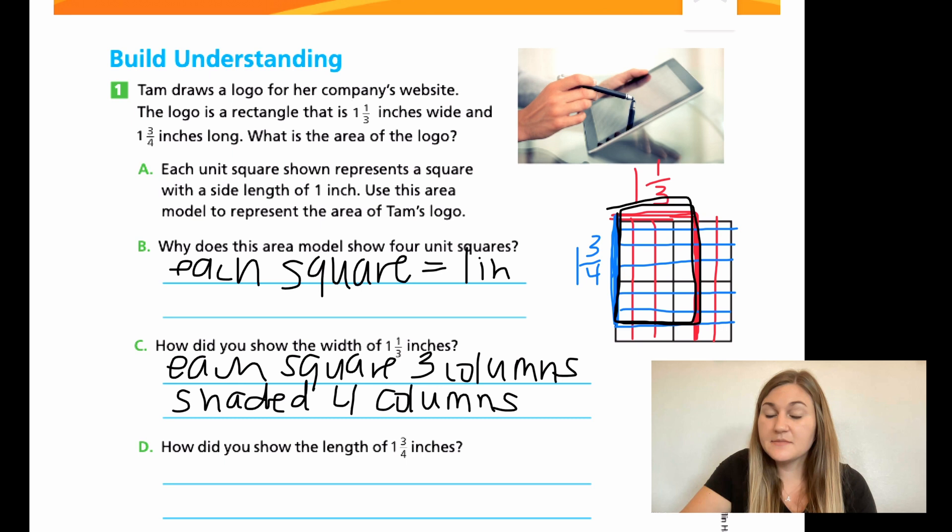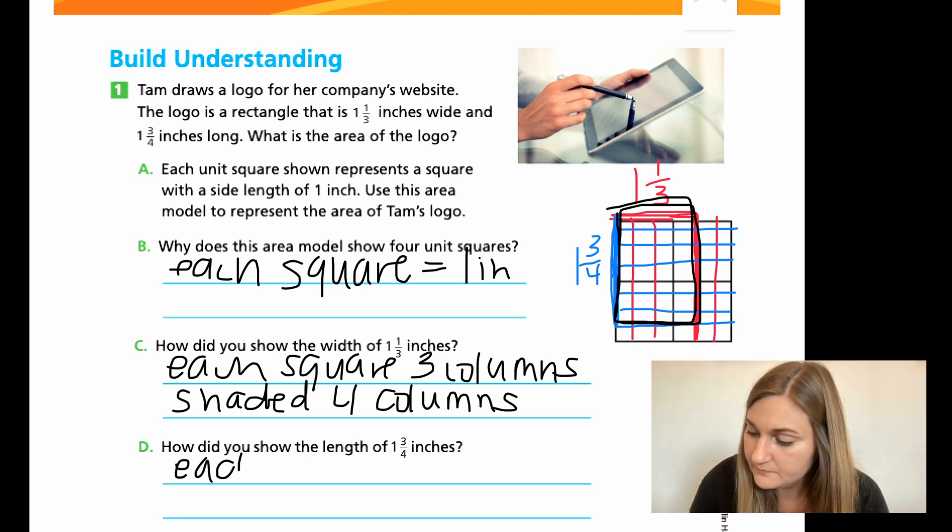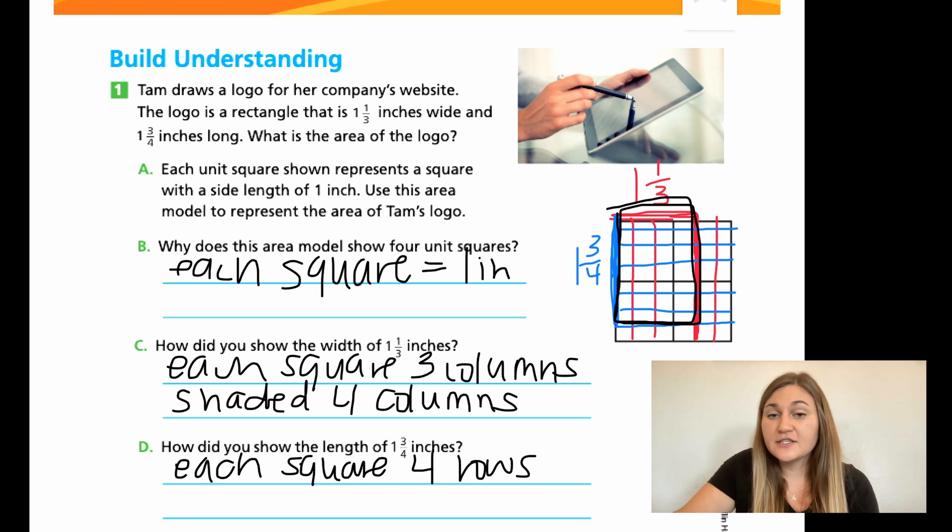And D is asking the same thing, but for the other measurement. How did you show the length of 1 and 3/4 inches? Same thing, each square had now 4 rows going the other side. So each square had 4 rows. And then if I turned this into an improper fraction, it would be 4 times 1 is 4 plus 3 is 7. So then I would have shaded 7 rows.